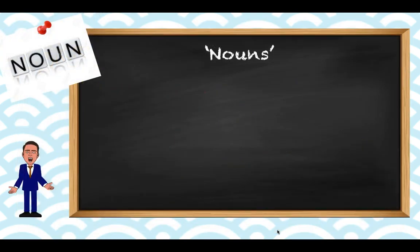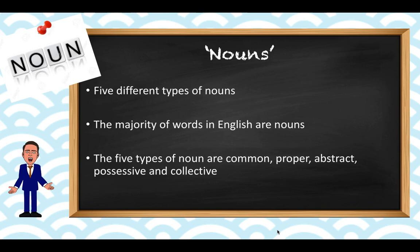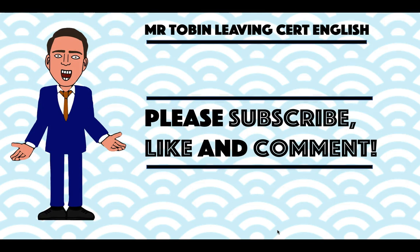So we've seen that there are broadly five different types of noun in English. A sentence doesn't need to have a noun to make sense — it does need a subject and a verb for that — but nouns are still important because they make up the majority of the words that we use in English. Remember, the five types are common noun, proper noun, abstract noun, possessive noun, and collective noun. I hope that you found this video useful. If you haven't already subscribed, please do. Next in the series on grammar, we're going to be looking at adjectives and adverbs. Please leave a comment if you have a question or a suggestion for other things that we might cover.